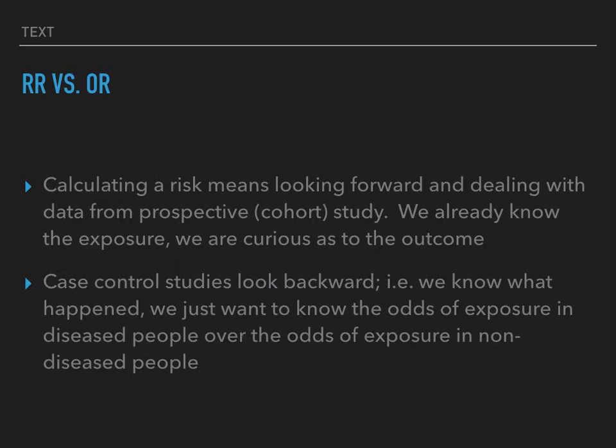Calculating a risk means looking forward and dealing with data from a prospective or cohort study. We already know the exposure and we are curious as to the outcome — basically calculating the risk in the exposed group over the risk in the unexposed group. Case-control studies look backwards; we know what happened and we just want to know the odds of exposure in diseased people over the odds of exposure in non-diseased people.